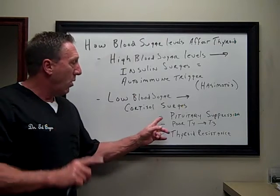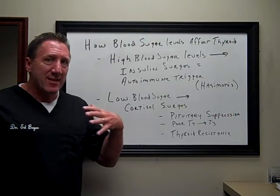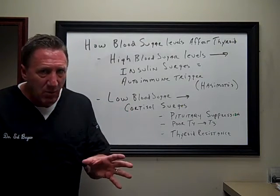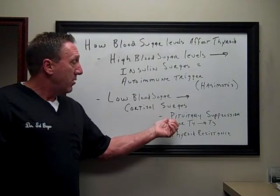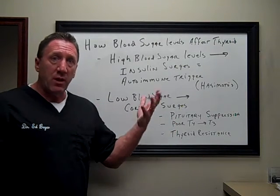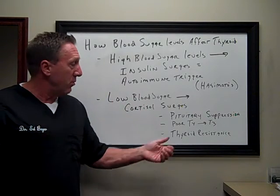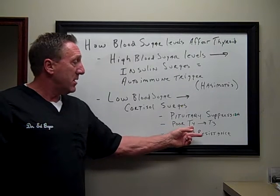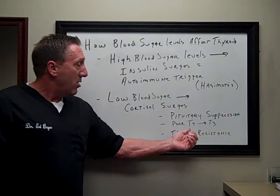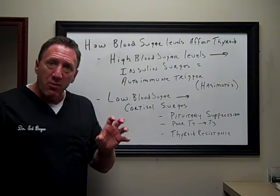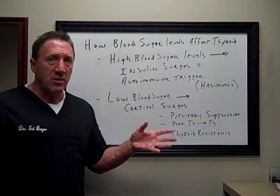How? Number one, it's going to cause pituitary gland suppression — and that's where TSH comes from. TSH is not a thyroid hormone; it's a brain hormone telling your thyroid to work. So the pituitary gland will become suppressed with elevated cortisol, and you won't be able to emit enough TSH to get your thyroid to work. You're not going to convert T4, the inactive form, over to the active form T3. And the ability of your T3 — the active form of thyroid — to get into the cells is going to be inhibited. That's called thyroid resistance.